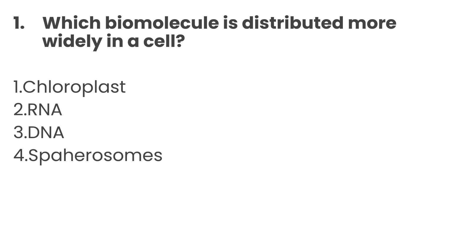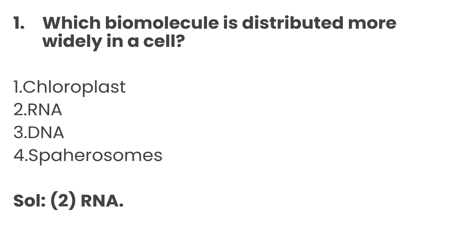In this video, I am going to talk about biomolecule-related important MCQs. First question: which biomolecule is distributed more widely in a cell? Option 1: Chloroplast, Option 2: RNA, Option 3: DNA, Option 4: Spirosomes. The correct answer is Option 2: RNA.